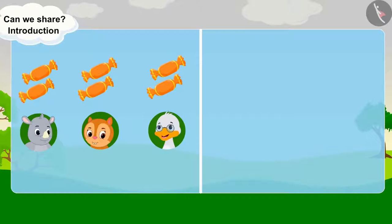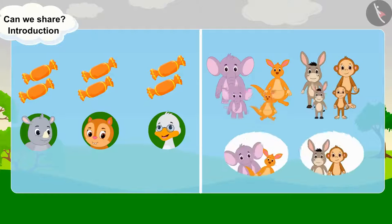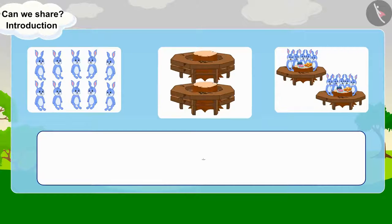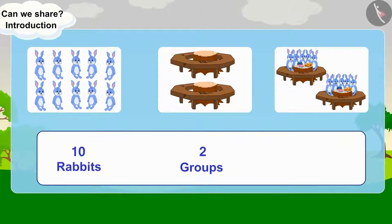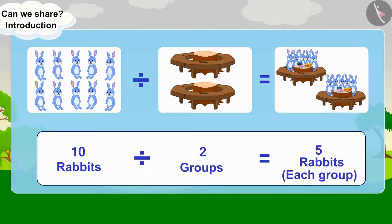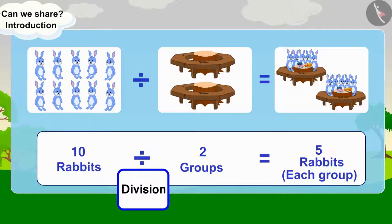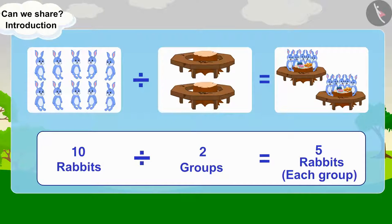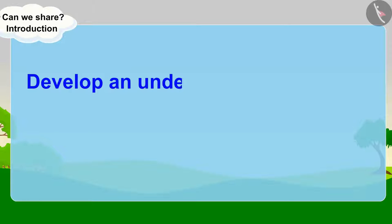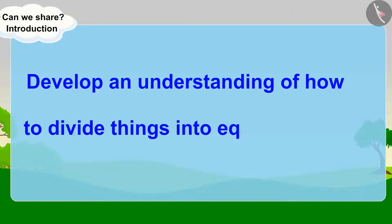Distributing things equally among people, or making equal groups of people or things, is called division. Here we are forming two equal groups of ten rabbits. Dividing ten rabbits into two equal groups, there are five rabbits in each group. This is the total number of things to be divided. This is the symbol of division. This is the total number of groups. This is the total number of things in each group. In this lesson, we will develop an understanding of how to divide things into equal groups.